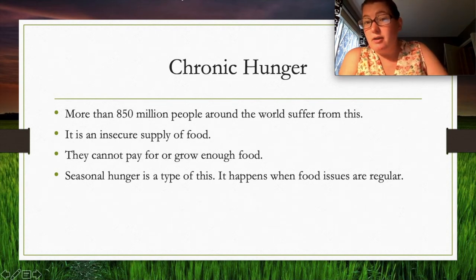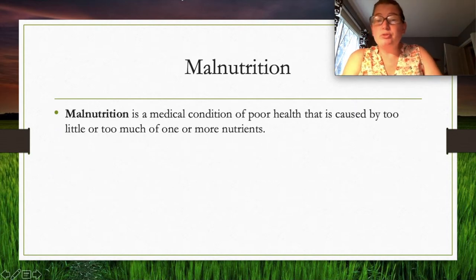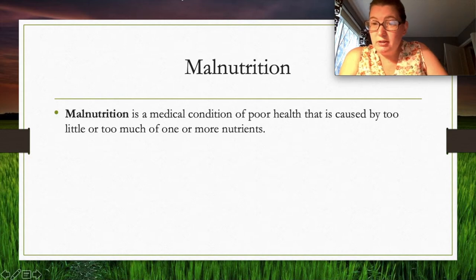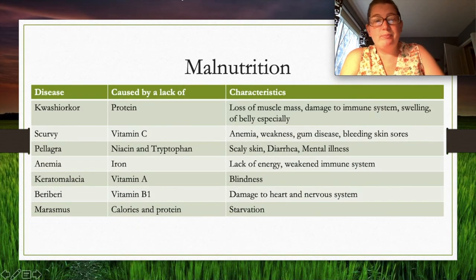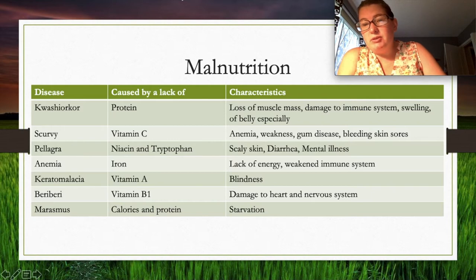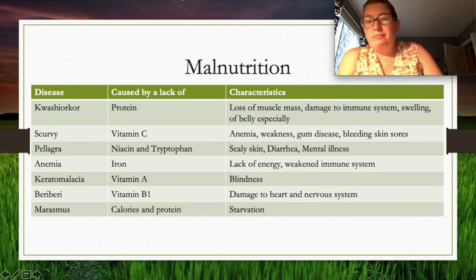Malnutrition is a relatively common medical condition where you're not getting enough of a nutrient, or too much of one — for example, eating only potatoes means too much starch and insufficient other nutrients. A common malnutrition issue is protein deficiency, which causes muscle loss, poor immune system, and swelling of the belly — that's why you sometimes see distended bellies in photos of starving children.